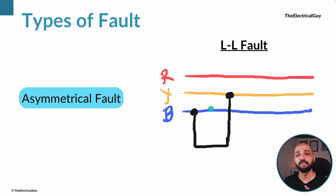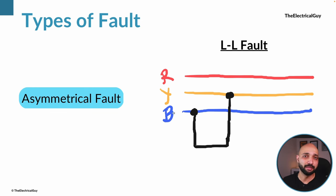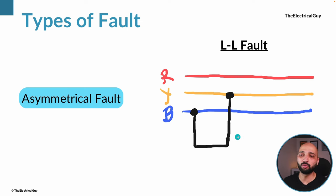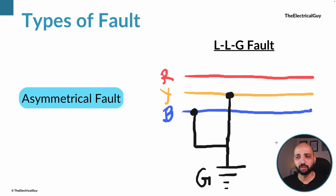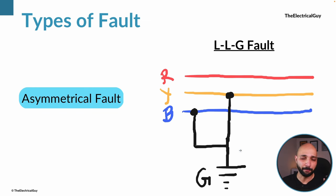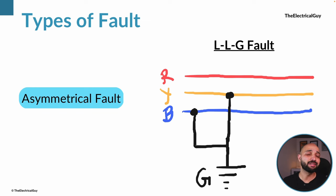There is also the double line fault, where Y phase and B phase are connected together. R phase remains healthy while Y and B are not, so the current flowing through all three phases will be different, resulting in asymmetry. There is also the double line to ground fault, where Y and B phases are connected together plus the ground is also in the picture. All of these are asymmetrical faults — the positive and negative half cycles are not equal, causing asymmetry.